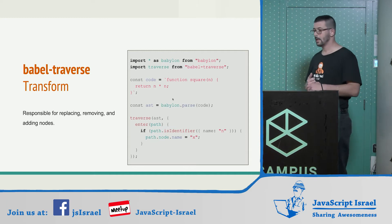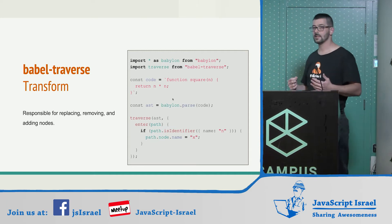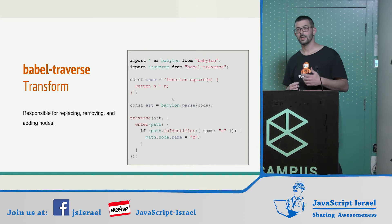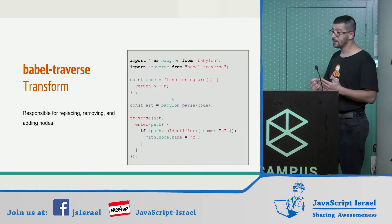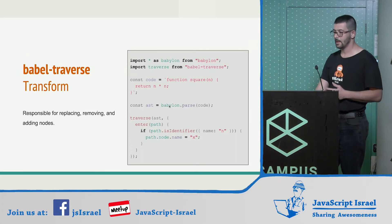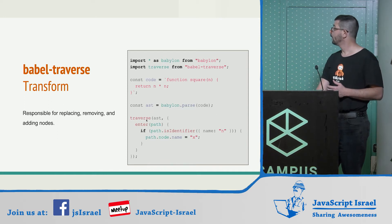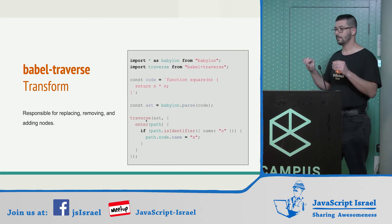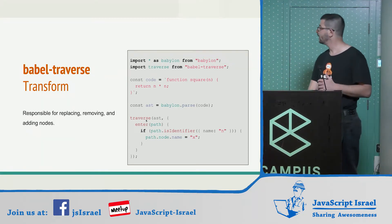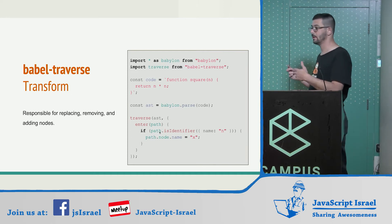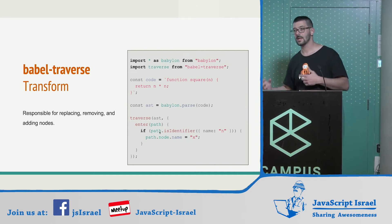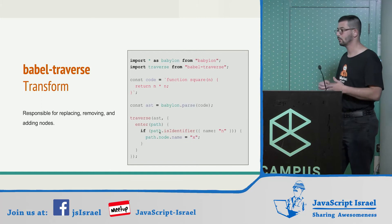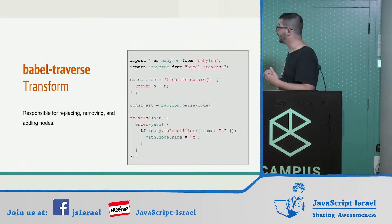The next tool responsible for transforming is called Babel Traverse. After the code is parsed by Babylon into an AST, the traverse method traverses the whole tree recursively. For every node it meets, it applies the code within a function. This is how our plugins work — this is how transformations of the AST happen.